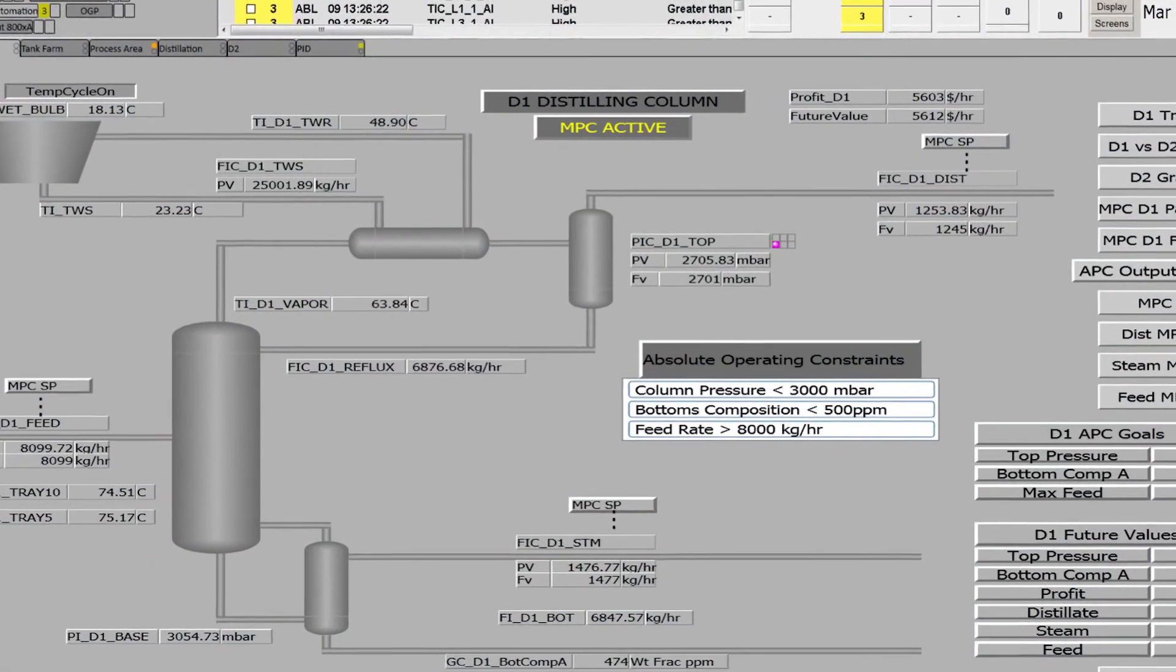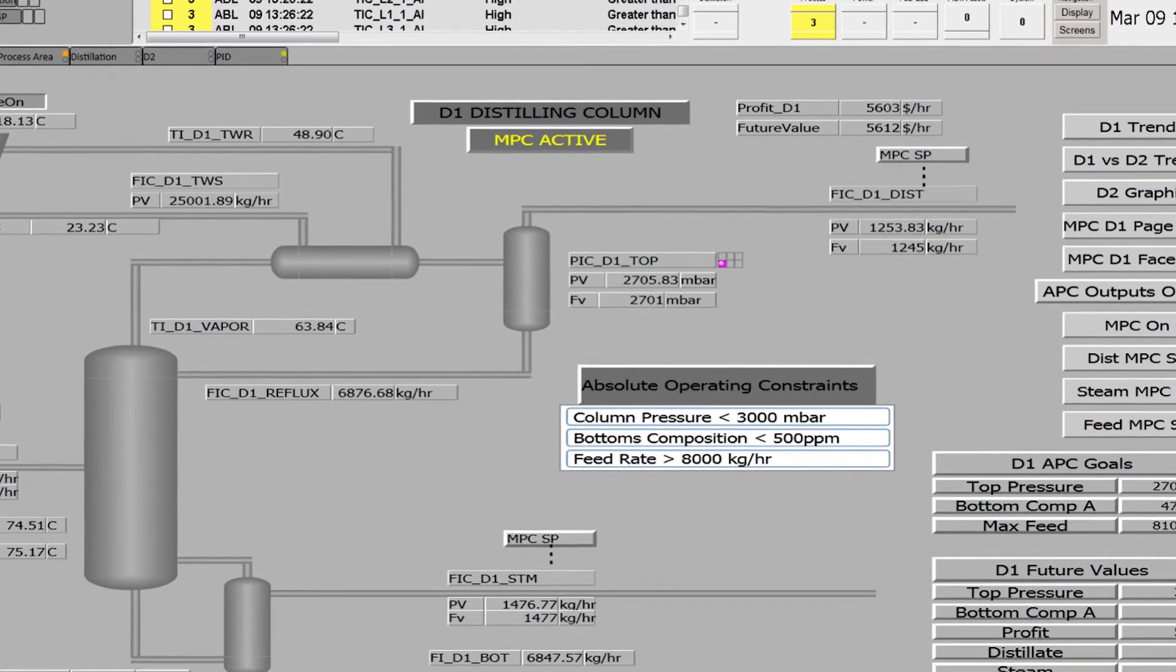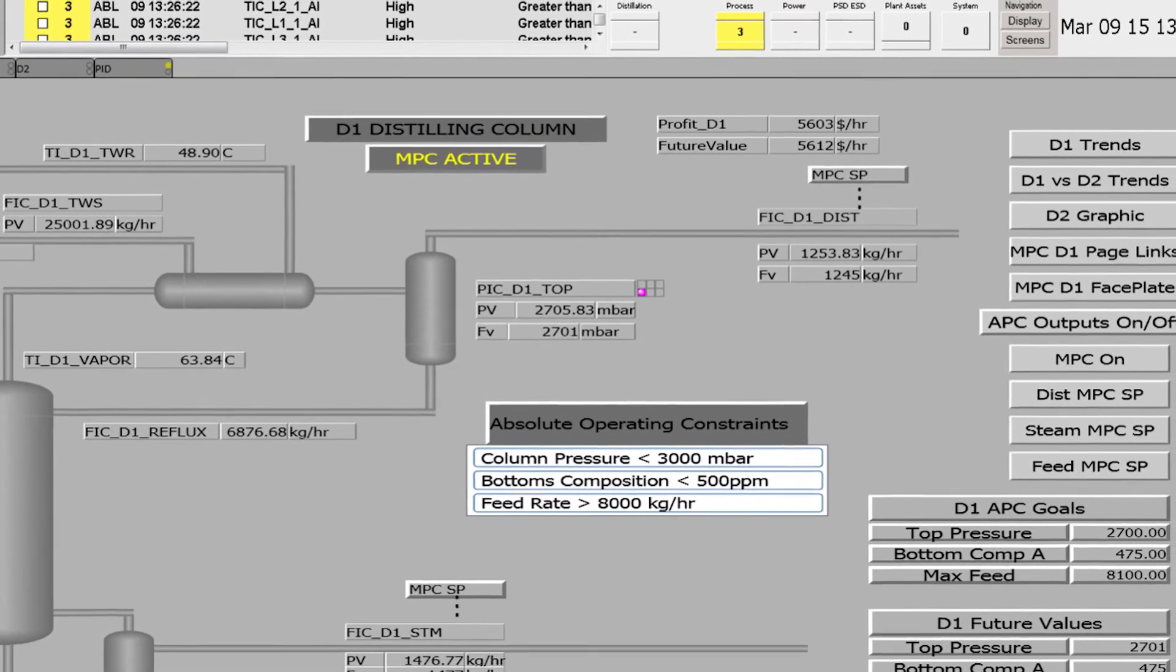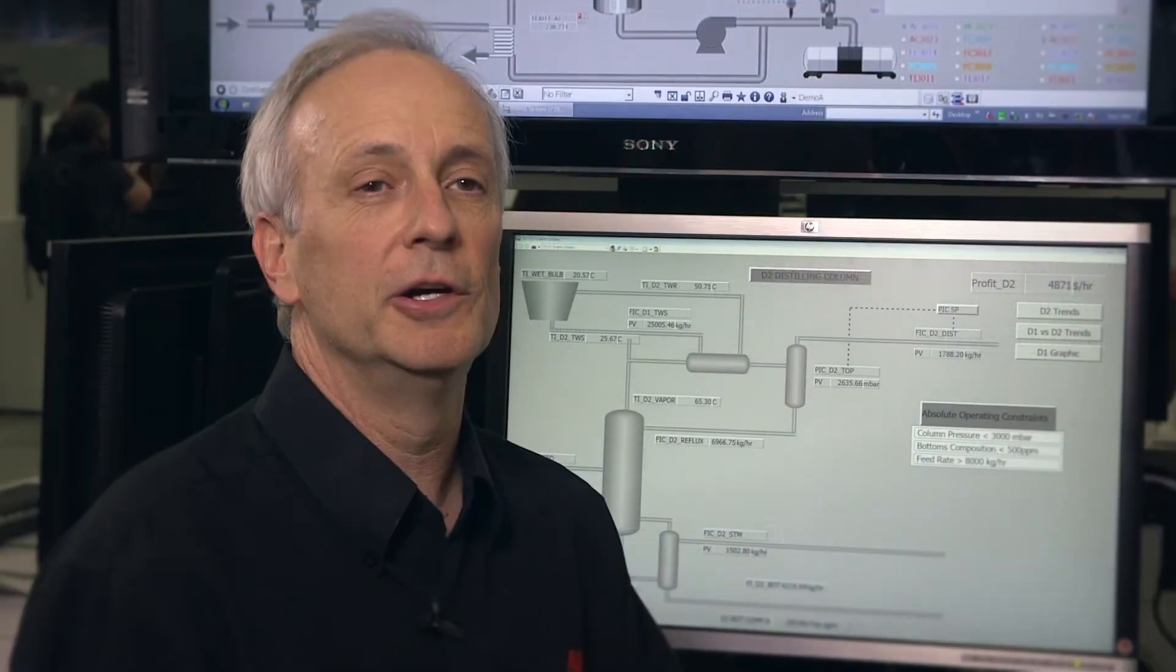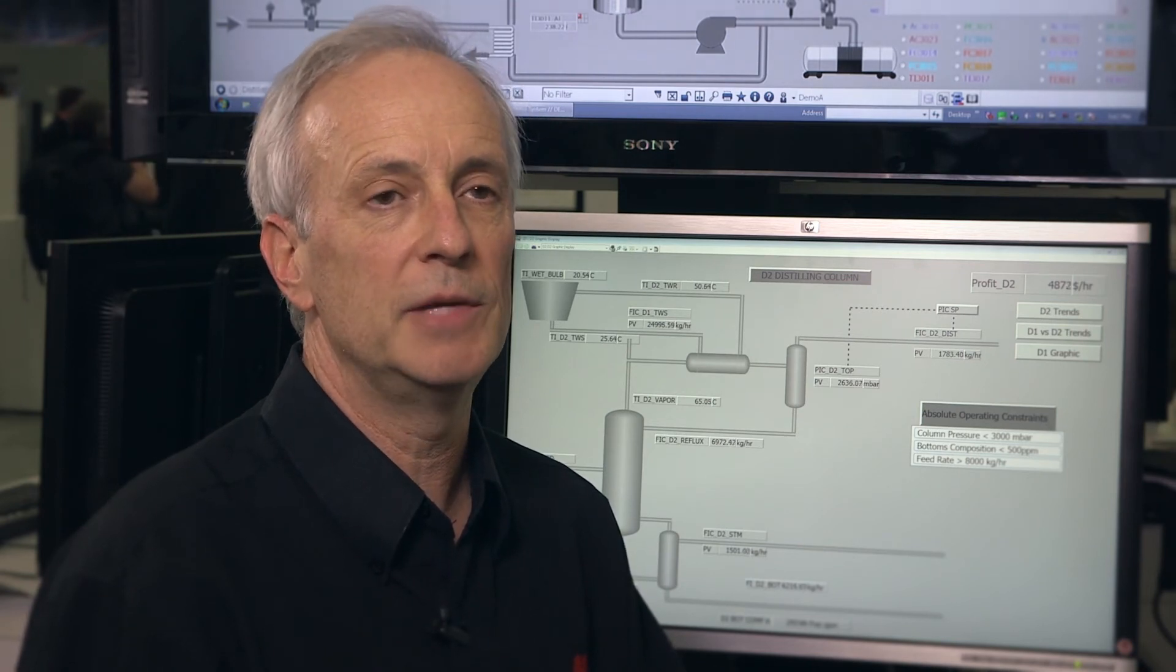Very simply, the benefit of the 800XA APC package is significantly reduced lifecycle cost. The way we do this is to provide the user with a single environment which can be used for everything from real-time data capture, to process model development, to controller deployment, to ongoing maintenance.